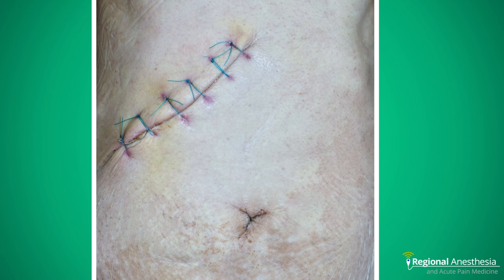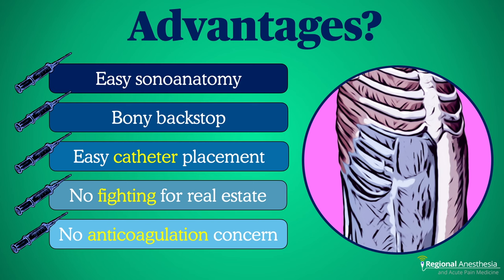That's ignoring the fact that it wouldn't cover the lateral aspect. And finally, because it's a relatively shallow block with no big vessels nearby, anticoagulation is not a concern in the way that it might be for epidural analgesia or anterior QL block. This is a huge advantage for our liver transplant patients who are both coagulopathic and deserving of high-quality analgesia.